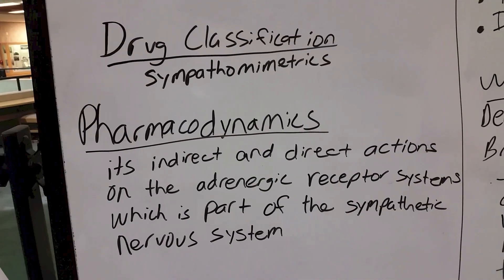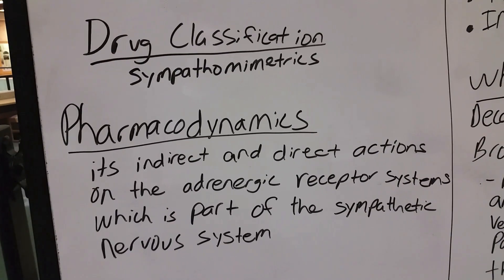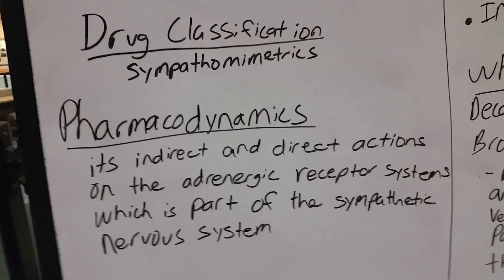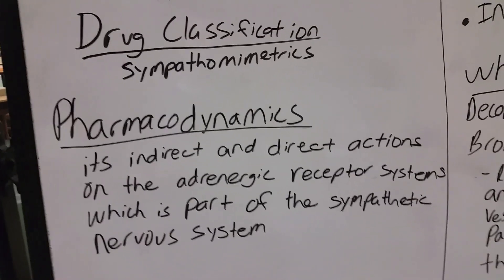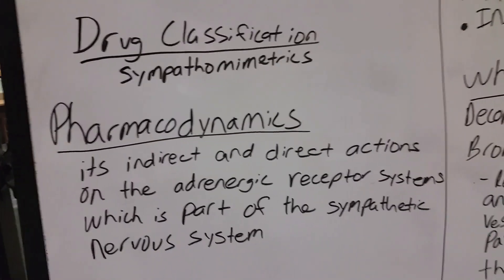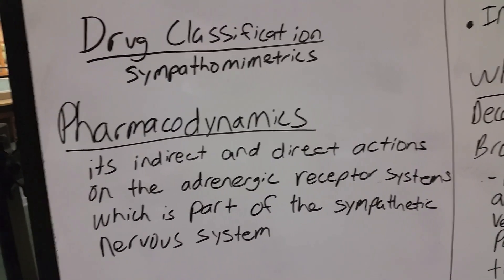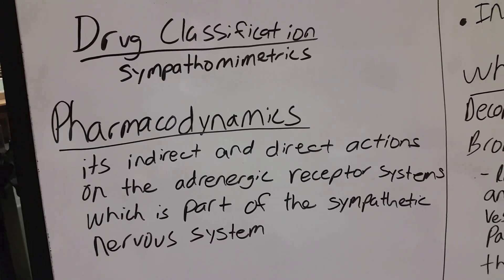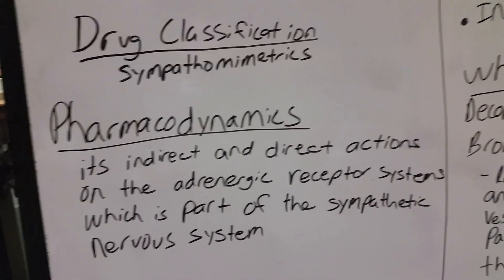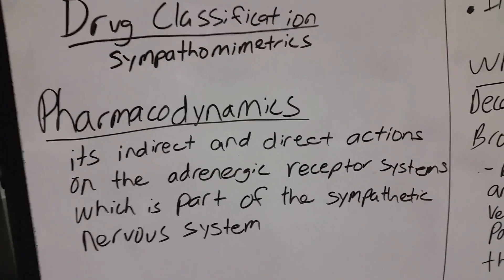The pharmacodynamics of the drug ephedrine — what the drug does to the body — involves its indirect and direct actions on the adrenergic receptor systems, which is part of the sympathetic nervous system.